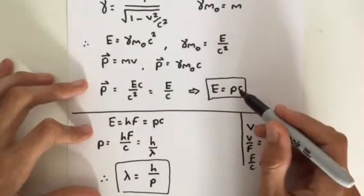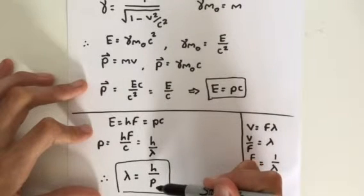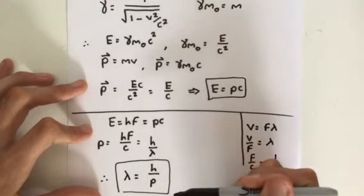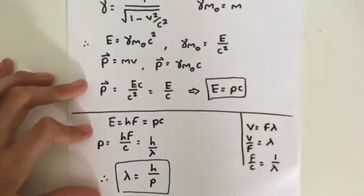So there's our two equations, E equals PC, and lambda equals H over P. So I hope that was useful for you, and I'll see you in the upcoming videos.